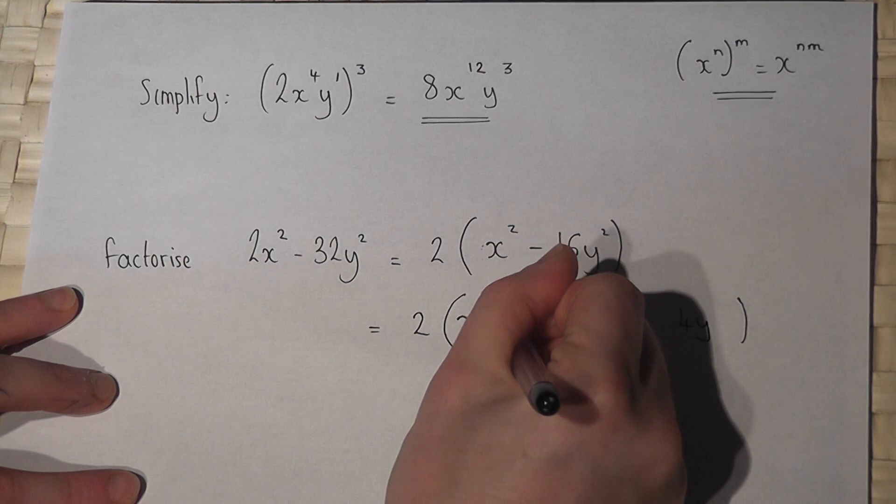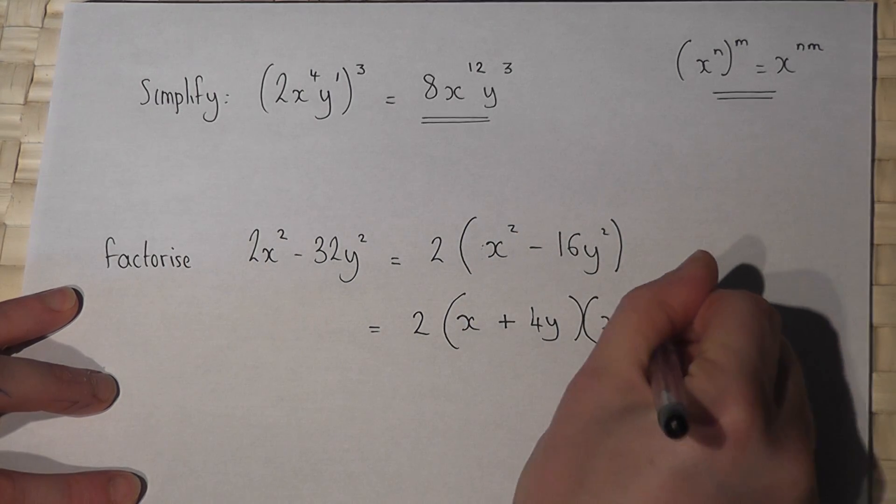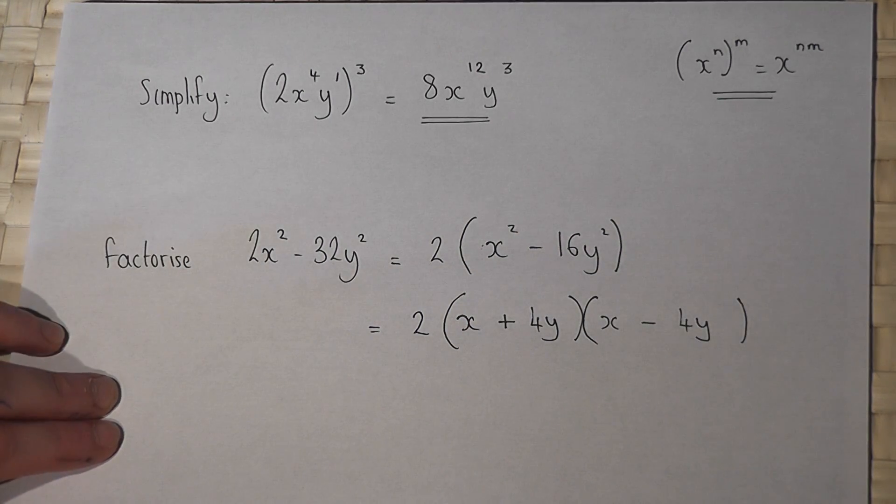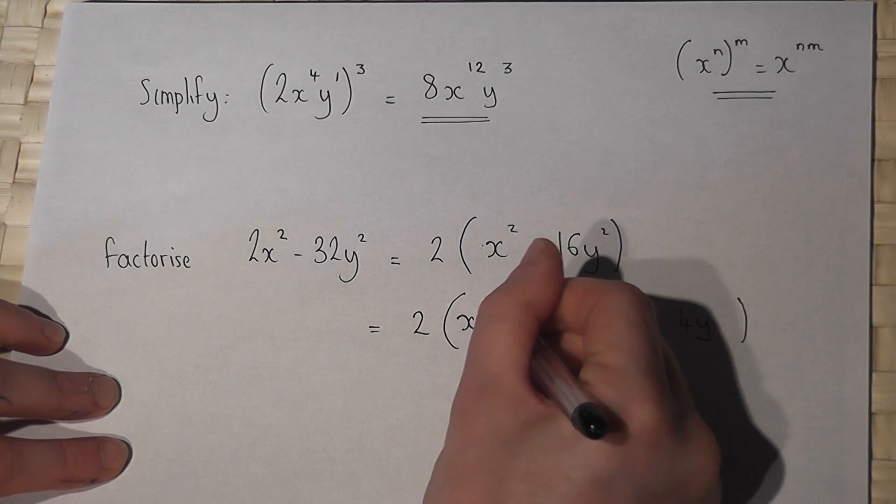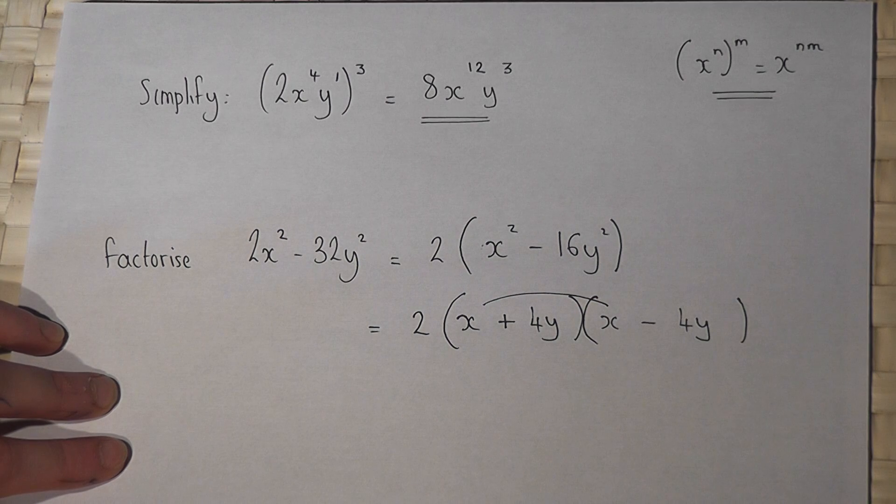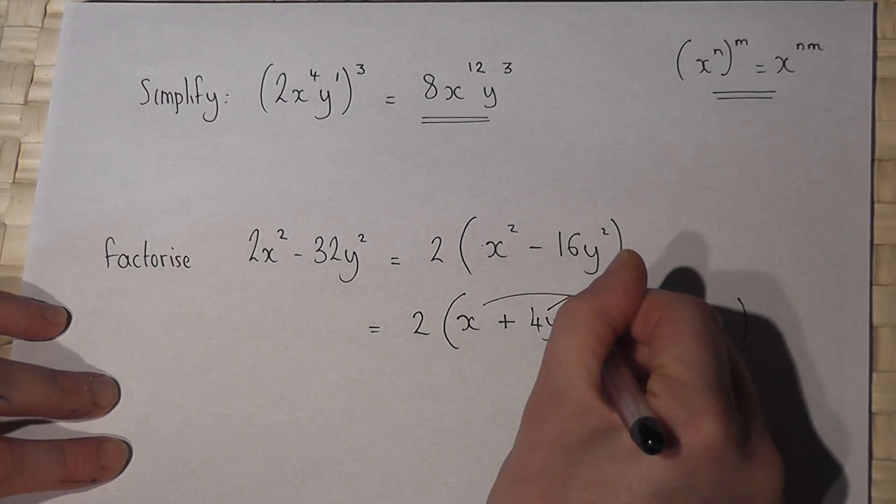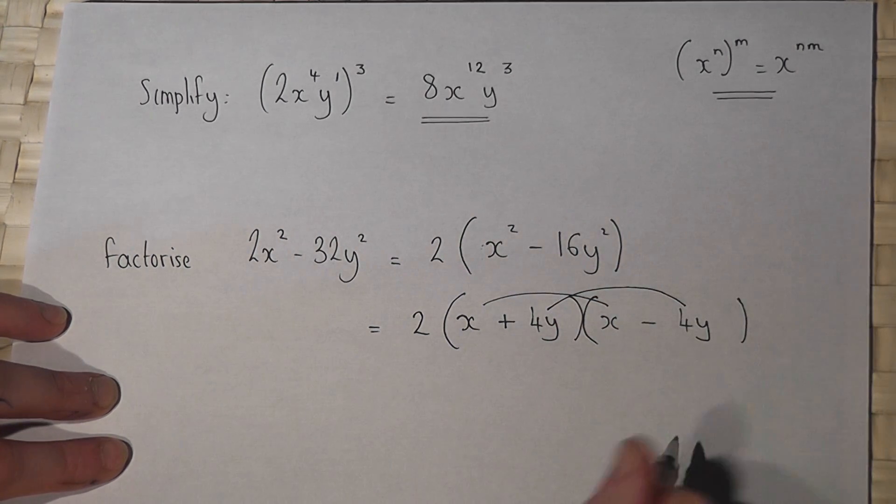To get minus 16y squared will be a 4y and a 4y, but to make it negative will be a plus 4y and a minus 4y. And just to prove why this is the case, x times x is x squared, 4y times 4y is 16y squared and it's negative.